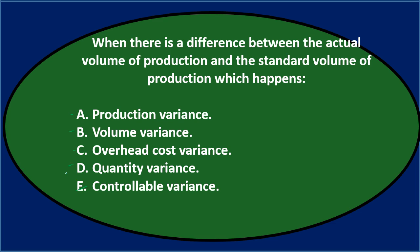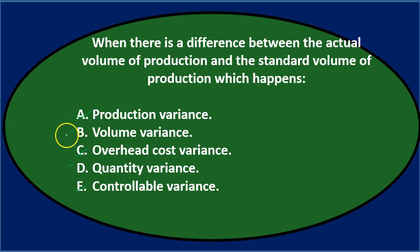Going through again: the production variance doesn't seem closely related to volume differences. Of the remaining options, B, C, and D sound more reasonable. Volume variance and quantity variance sound similar to each other, so removing C (overhead cost variance), it comes down to B and D. Since we typically call it the volume variance, final answer B — volume variance.